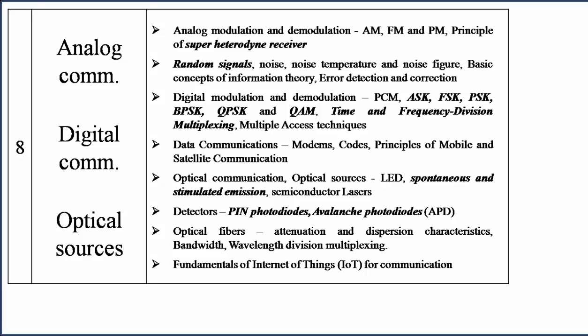In analog and digital communication, modulation and demodulation techniques are important — know the differences between each. The superheterodyne receiver is very very important. For digital modulation: ASK, FSK, PSK, BPSK, QPSK, QAM — the probability of error and constellation diagrams are very important. Time Division Multiple Access (TDMA) and Frequency Division Multiple Access (FDMA) are emerging topics, and you can expect one or two questions from IoT.